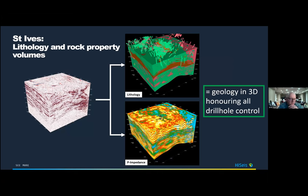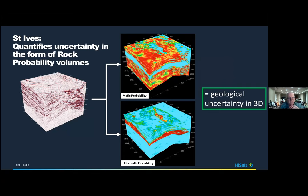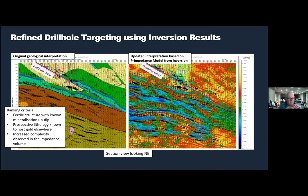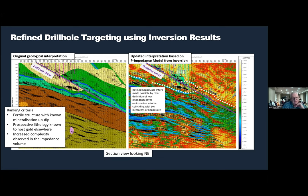Once you know there's separation from the logs, you can run the inversion process and get lithology volumes out. One output is a P-impedance volume that honors drill hole control, and you can also get probabilities of different lithologies. In this particular example it really did change the interpretation — you can see the original interpretation of the shear zone, the Kapai Slate, and the additional detail the P-impedance model provides, effectively revealing new targets in the zone of interest.